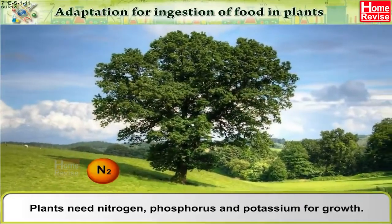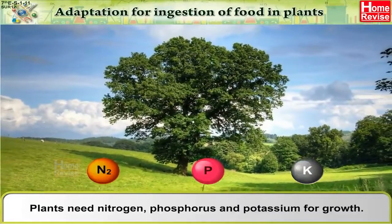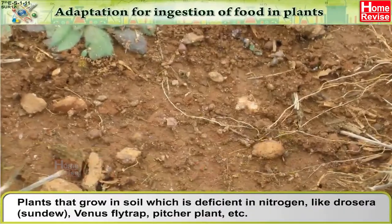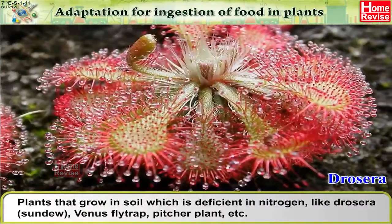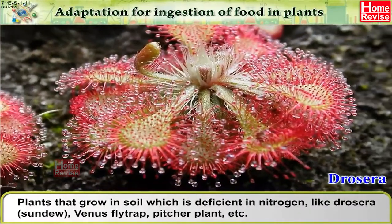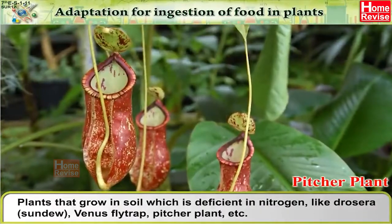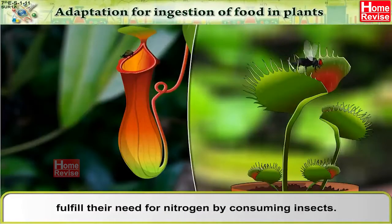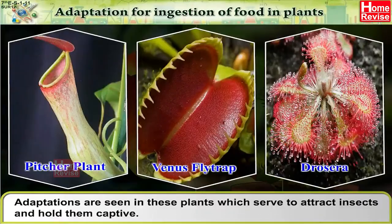Plants need nitrogen, phosphorus and potassium for growth. Plants that grow in soil deficient in nitrogen — like drosera (i.e., sundew), venus flytrap, and pitcher plant — fulfill their need for nitrogen by consuming insects. Adaptations are seen in these plants which serve to attract insects and hold them captive.